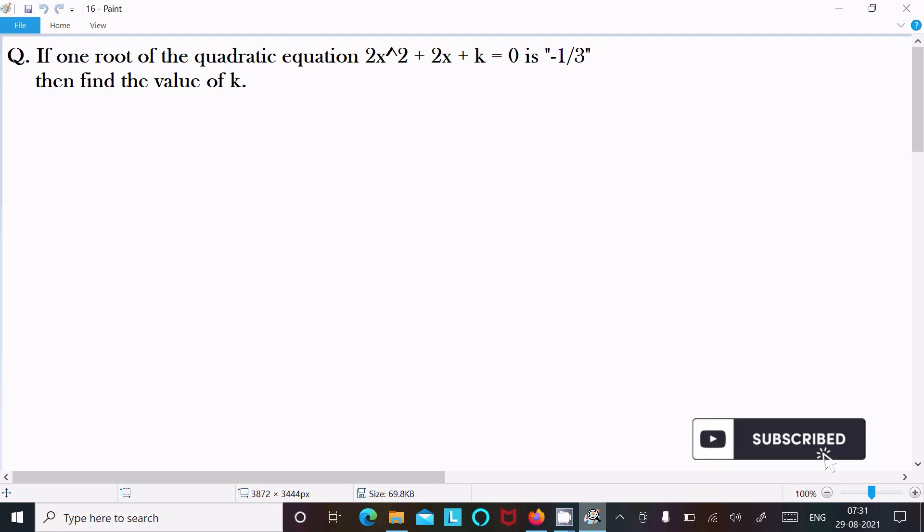I am going to find the value of k if one root of the quadratic equation 2x² + 2x + k = 0 is -1/3. Let's see the answer. Writing the given equation: 2x²